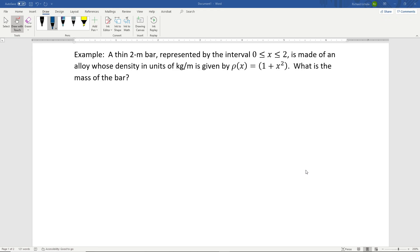Using the formula we just discussed, the mass equals the integral from a to b, which in this case is from 0 to 2 of our density function, 1 + x² dx. Now we just integrate this. The integral of 1 + x² gives x + (1/3)x³ evaluated from 0 to 2.